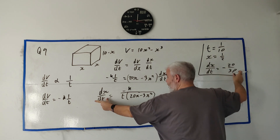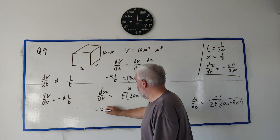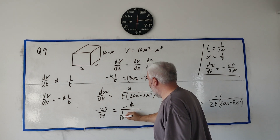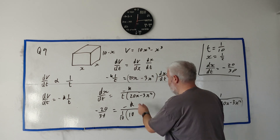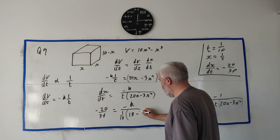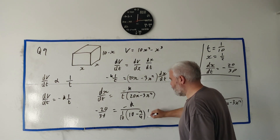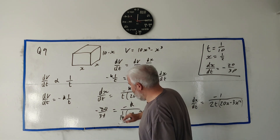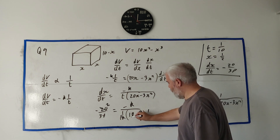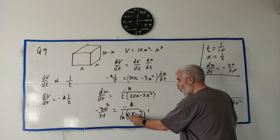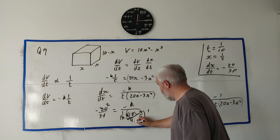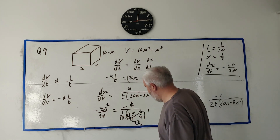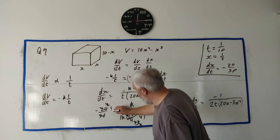They give us t, x, and dx/dt, so the only unknown is k. Substituting: −20/37 = −k / [(1/10)(20·(1/2) − 3·(1/4))]. That gives (1/2)·20 = 10 and 3·(1/4) = 3/4, so the bracket is 10 − 3/4 = 37/4. Working through the arithmetic gives k = 1/2.